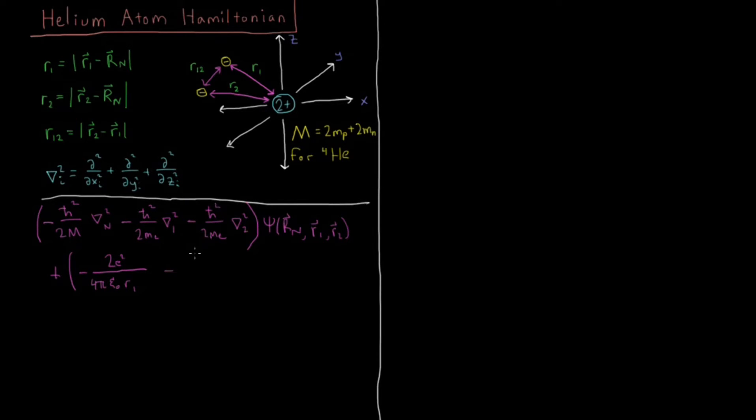Then we have minus 2e squared over 4πε₀R2, the attraction between the nucleus and electron 2. Then our final term is the repulsion between these two electrons, which is plus e squared over 4πε₀R12. And that's our V operator. That will again act on the wave function, which is a function of all coordinates, all nine coordinates of the three particles.